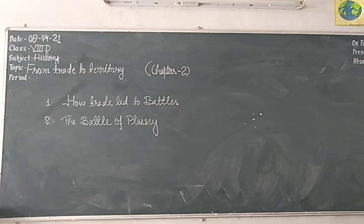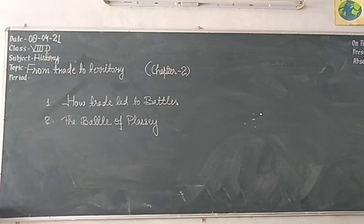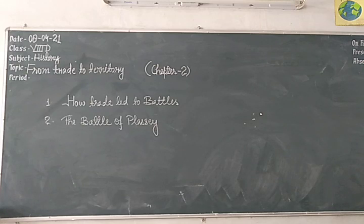From the start of the 18th century, conflict between the company and the Nawab of Bengal began, just after the death of Aurangzeb. After his death, many strong Nawabs and commanders of the Mughal Empire divided the territory into a number of powers. In this way, Bengal Nawabs gained too much power and autonomy and became the Nawabs of Bengal.